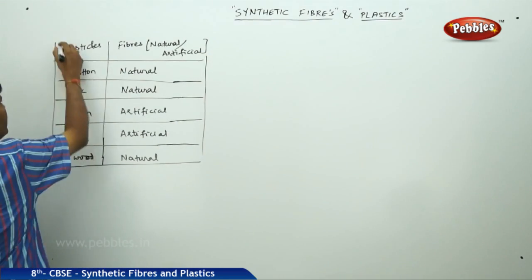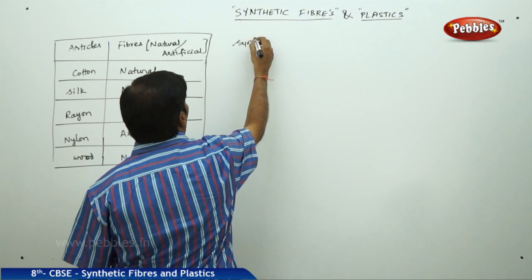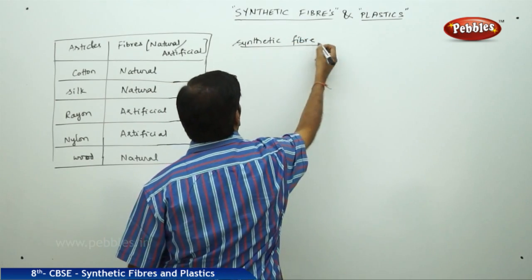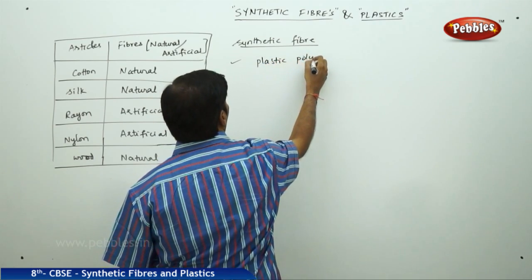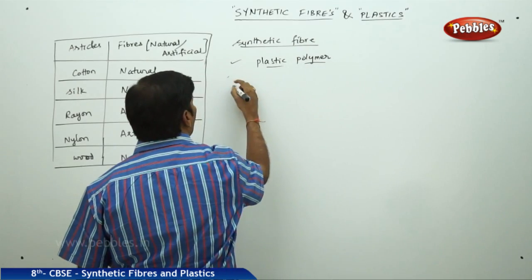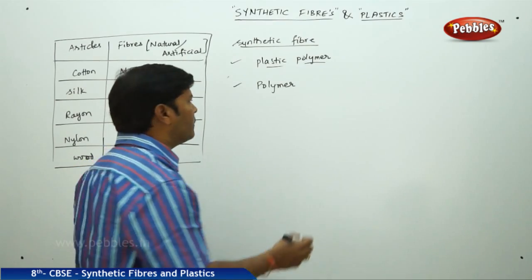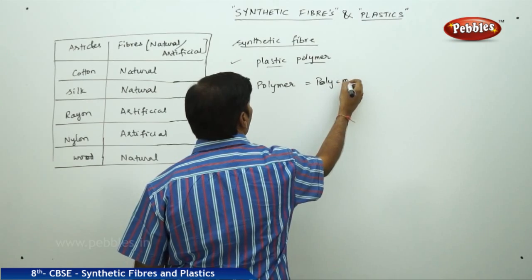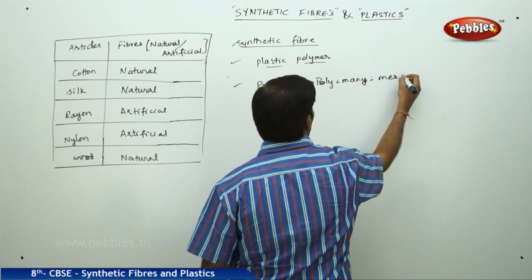From this table, the information we can gather is that a synthetic fiber is also nothing but a plastic polymer. When you say polymer, you split the word into two parts: poly, which means many, and mer, which means parts.